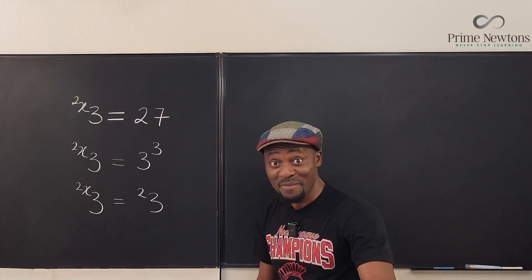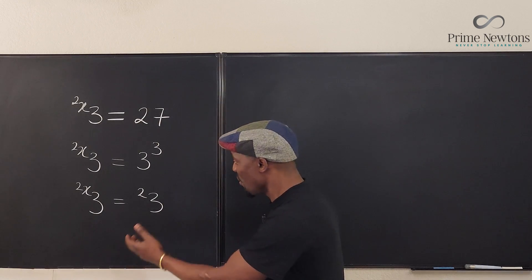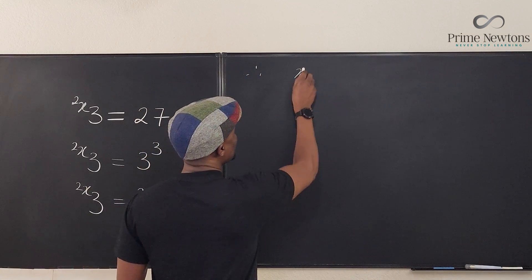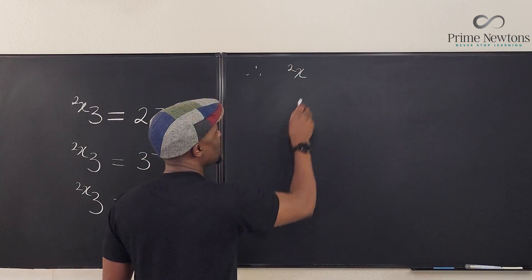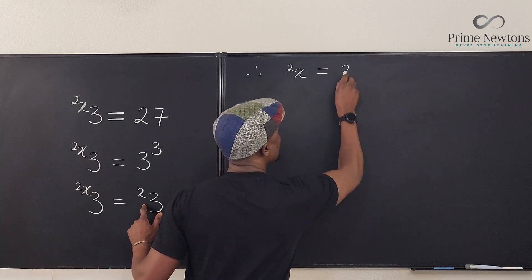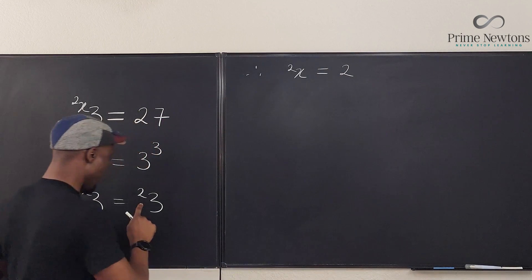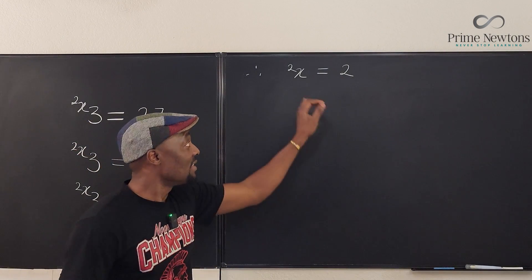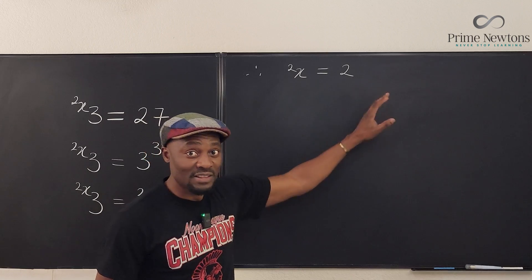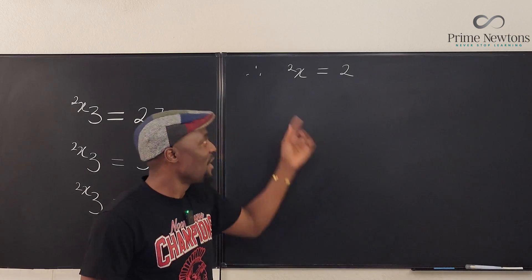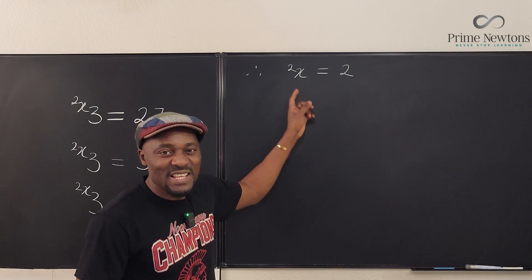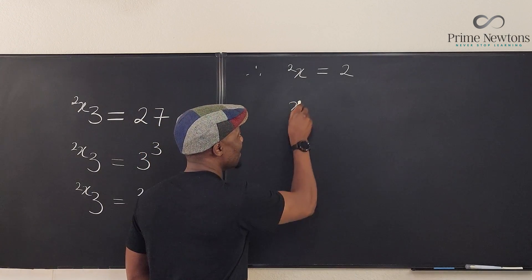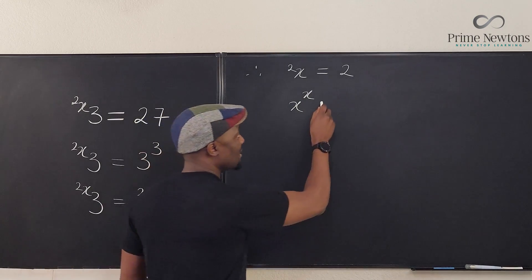So now, obviously, because this is an equation, whatever is on top here must be what is here. So we can say, therefore, x tetrated to 2 must be equal to 2. See, the powers are the same because you have the same base. All you have to do is solve this. Now remember, this is not x squared. So don't take the square root of both sides. You still have to think about it. What does this mean? Well, this is a tower of x of height 2. So it means this is the same thing as saying x raised to power x is equal to 2.